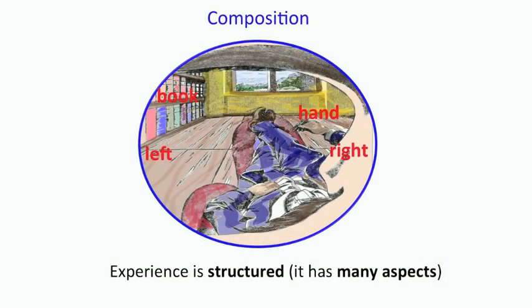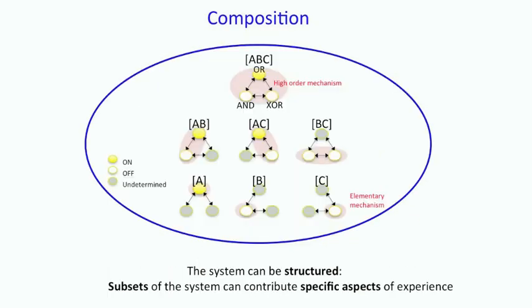Now, composition. Experience is structured, translates here, very briefly, into, well, whatever these mechanisms are that form a system with causes and effects that can generate your experience, they can be structured. And here we see the power set of these simple three elements that I'm going to show repeatedly, in which some on and some off, you can consider individual elements, or the first order elementary mechanism. Then you have the power set of the combination of two, three, four, and so on. So that's the possible substrate for this being structured of experience.